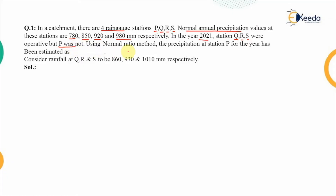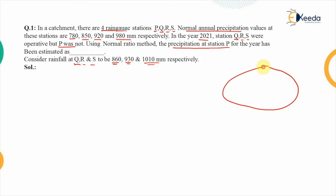In the year 2021, stations Q, R, and S were operative but station P was not. Using the normal ratio method, we need to estimate the precipitation at station P for the year 2021. Stations Q, R, and S received rainfall of 860, 930, and 1010 millimeters respectively. Station P is the missing station.